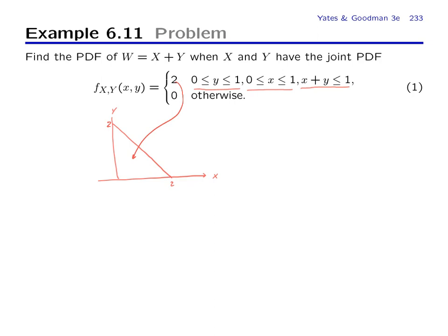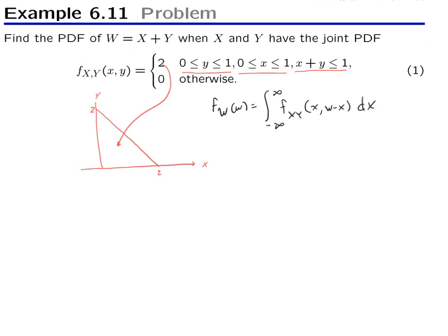And the theorem says that the PDF of W, which is the sum of x and y, is equal to the integral from minus infinity to infinity, the joint PDF at x and w minus x, dx. And when you look at this integral, you realize this is a different integral for every value of w. And the w's of interest are of course corresponding to w's between zero and two. For example, here's a w there. What we're doing is we're integrating along the line in the xy plane where x varies and y is equal to w minus x, we're integrating along this line.